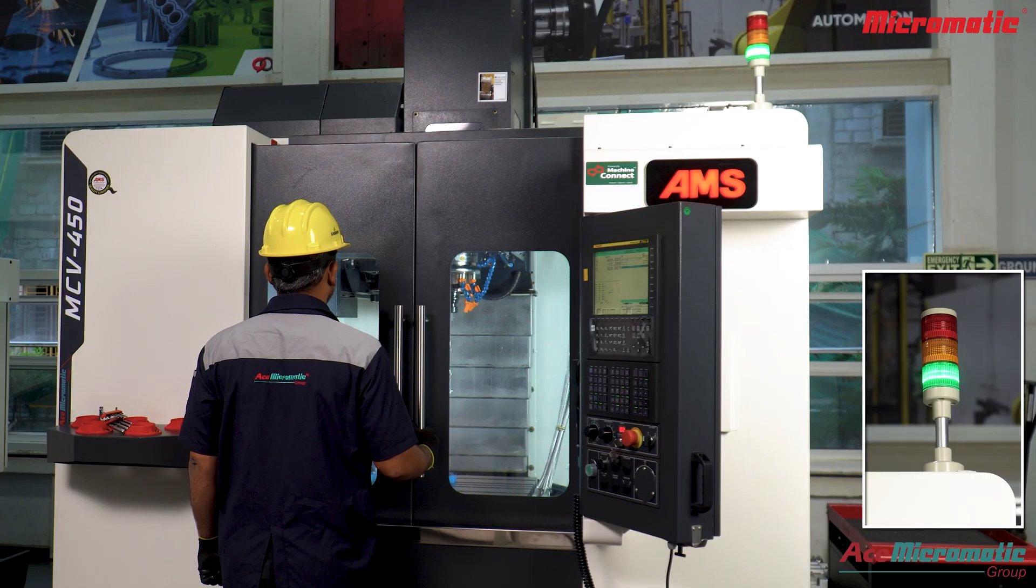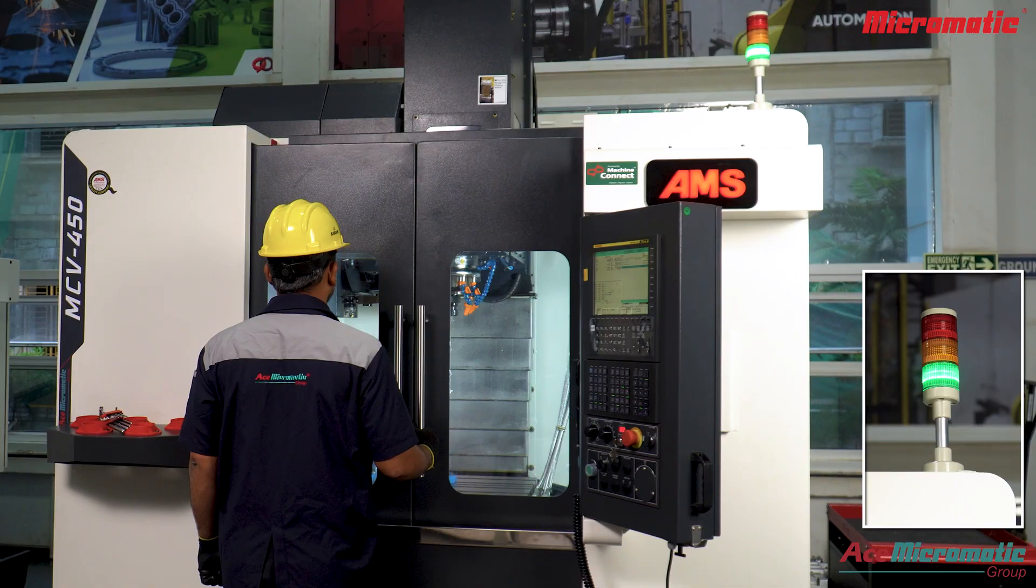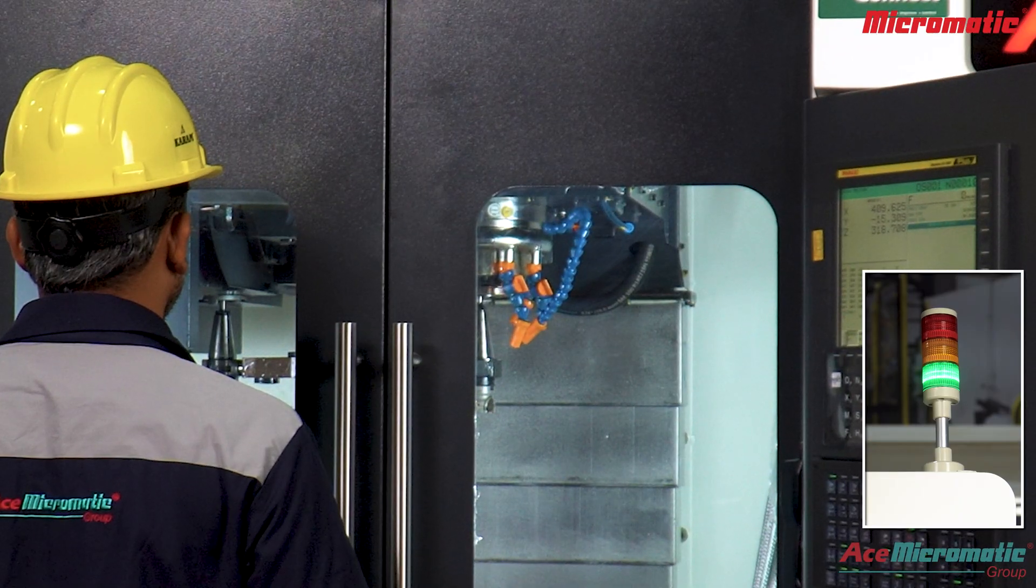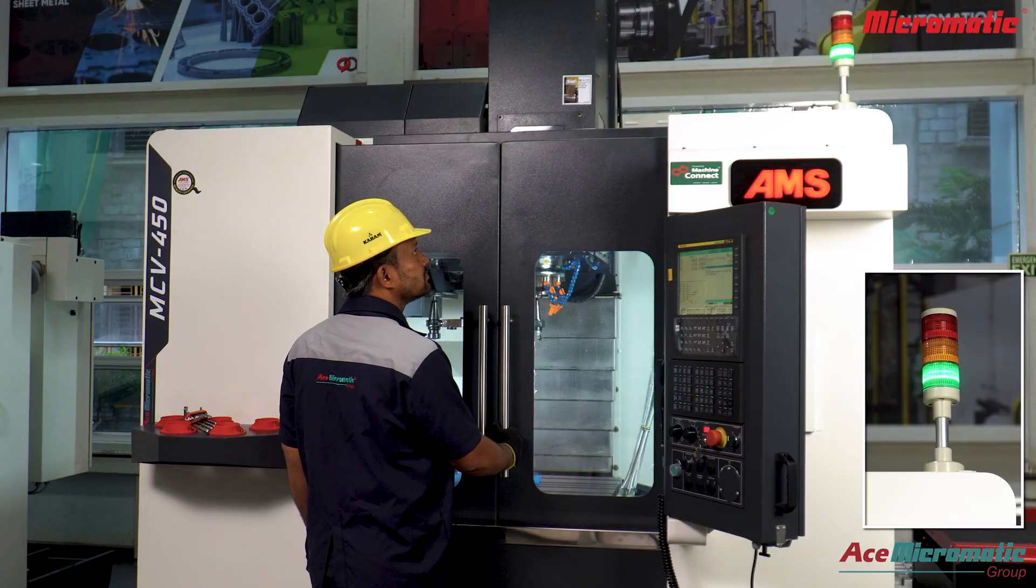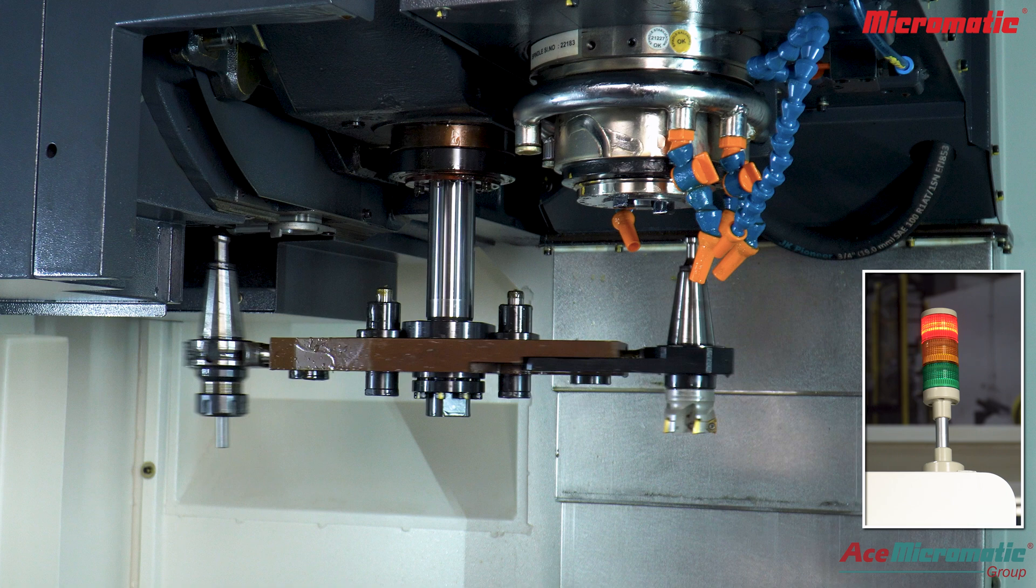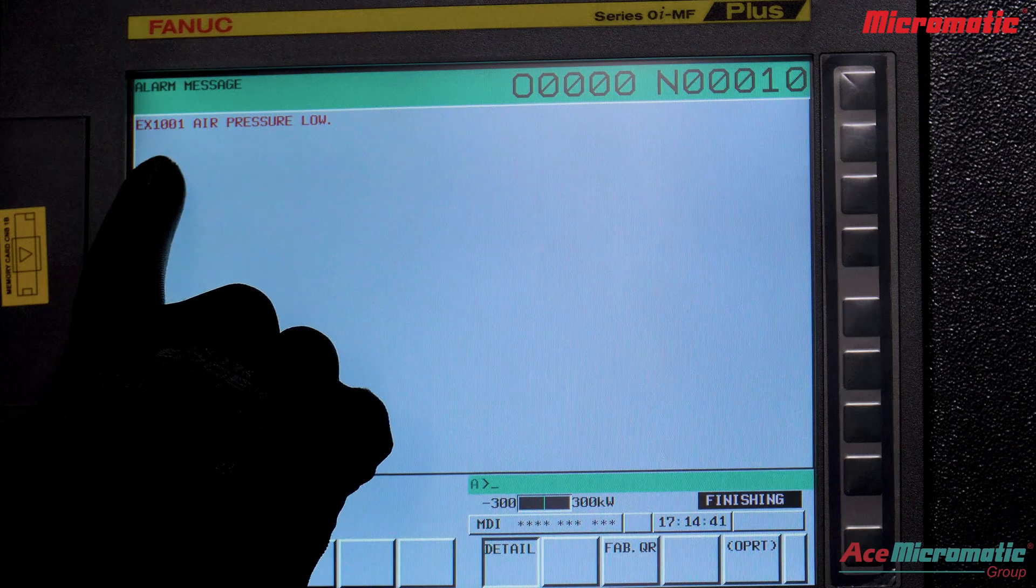Occasionally you may encounter an air pressure low alarm. When this alert appears, the automatic cycle halts to protect the machine. Here are the steps to resolve it.